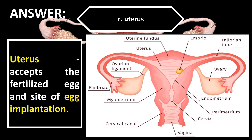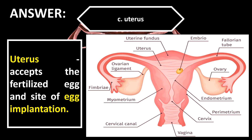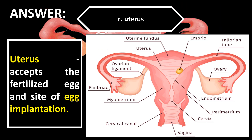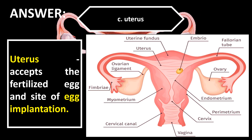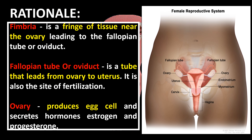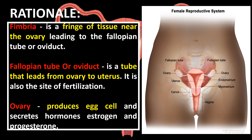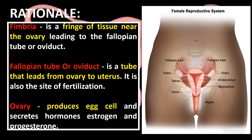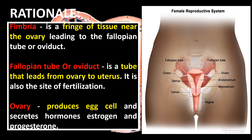The correct answer is letter C, Uterus. The uterus accepts the fertilized egg and is the site of egg implantation. Fimbria is a fringe of tissue near the ovary leading to the fallopian tube or oviduct. The fallopian tube or oviduct is a tube that leads from the ovary to the uterus and is also the site of fertilization. The ovary produces egg cells and secretes the hormones estrogen and progesterone.